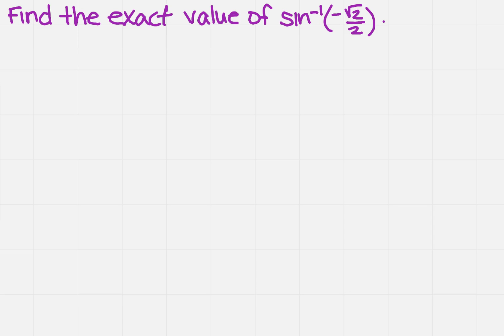Think about it this way. The inverse sine of our number, minus square root of 2 over 2, is going to be the number alpha. We're looking for alpha in an interval, and the interval for sine is negative pi over 2 to pi over 2.